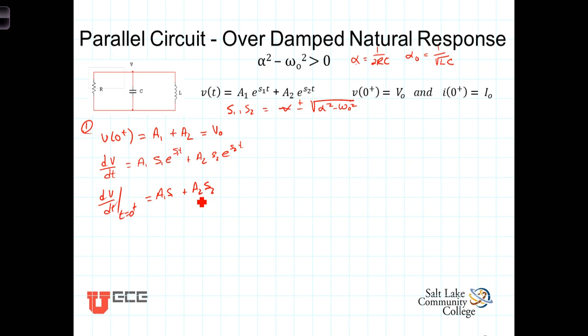To get around that impasse, remember that the current in a capacitor is i_C(t) = C·dv/dt. Therefore, dv/dt = i_C/C. This is true for all time, and certainly true at t = 0⁺. Thus we can evaluate the derivative at t = 0⁺ indirectly by finding the current i_C(0⁺) and dividing by the capacitance.